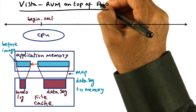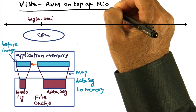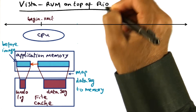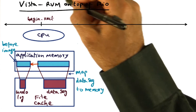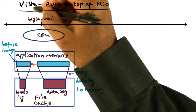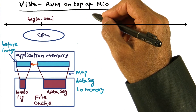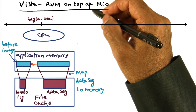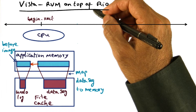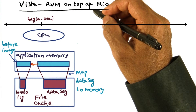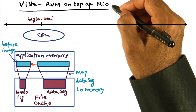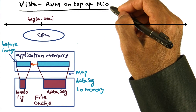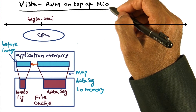Vista is the RVM library that has been implemented on top of the Rio file cache. The semantics of RVM implemented in Vista is exactly the same as what we saw in the previous lesson, namely LRVM. It is just that the implementation takes advantage of the fact that it is sitting on top of a Rio file cache.